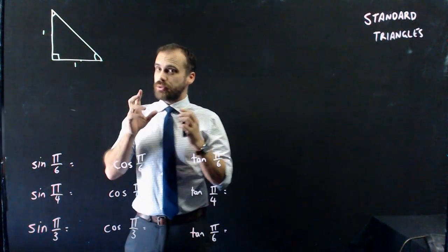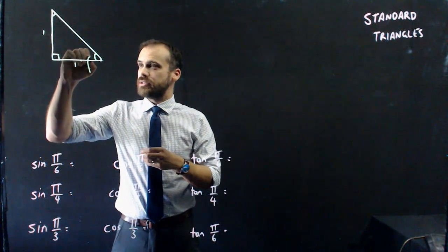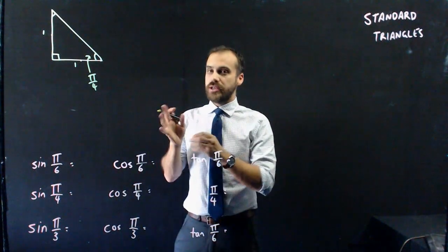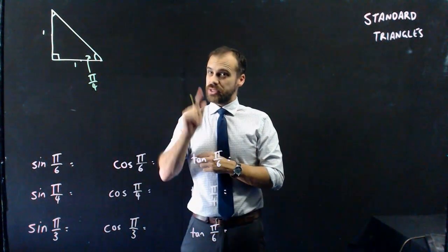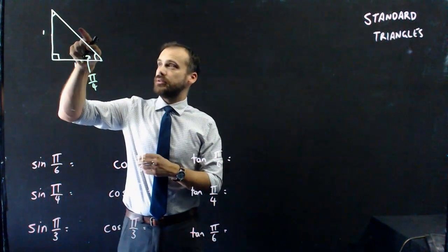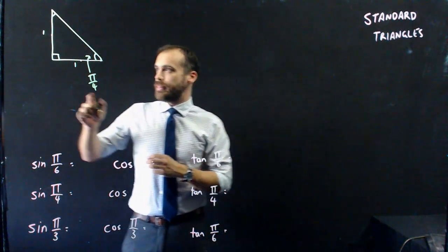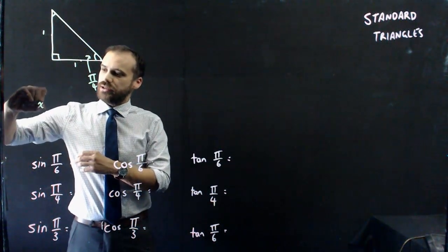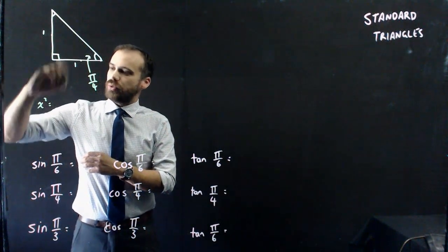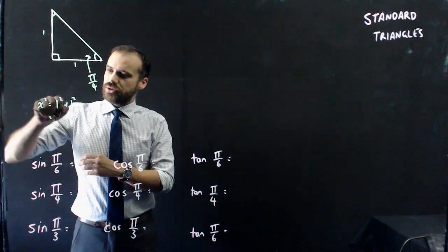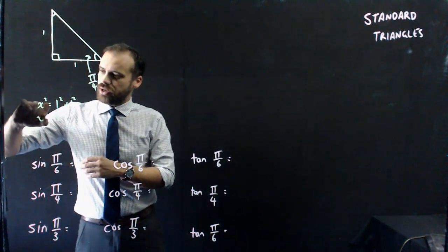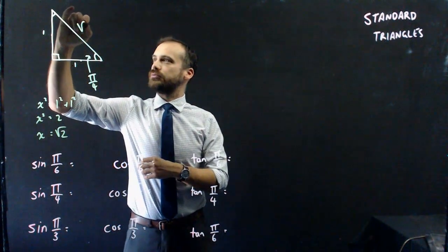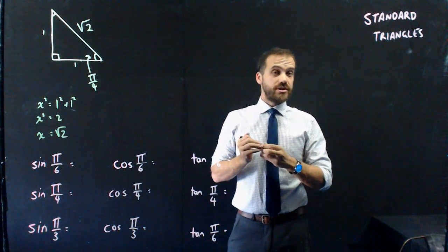But we're in big school now, so we don't talk in degrees — we talk in radians. So this is pi on 4 radians. This is our standard triangle, but it's missing one important bit: the hypotenuse. How long is the hypotenuse? Well, using Pythagoras' theorem, we can say that the hypotenuse here — let's call it x squared — is equal to 1 squared plus 1 squared, which is 1 plus 1, which is 2. So x squared equals 2, which means x is equal to the square root of 2. That is our first standard triangle.